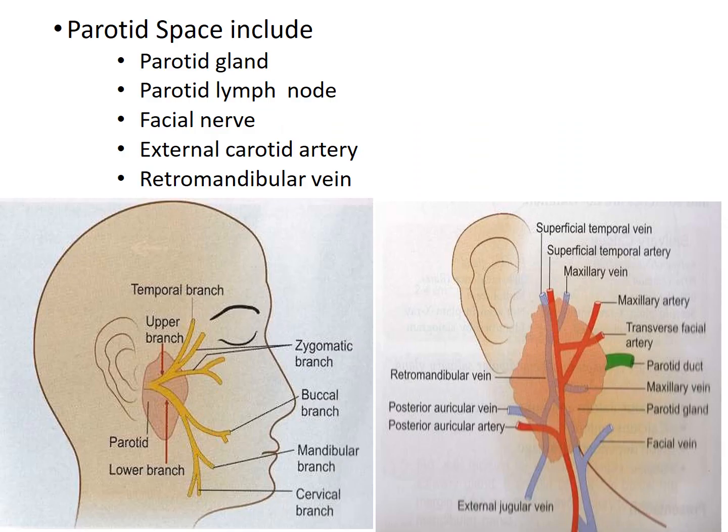The parotid space includes the parotid gland and its associated parotid lymph nodes, the facial nerve, external carotid artery, and the retromandibular vein.